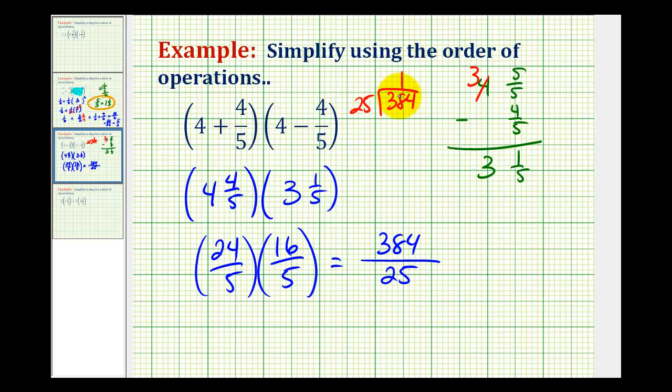There's 1 25 in 38, we subtract, this is going to give us 13, bring down the 4. There's 5 25s in 134. 5 times 25 is 125, and now when we subtract, we have a remainder of 9.